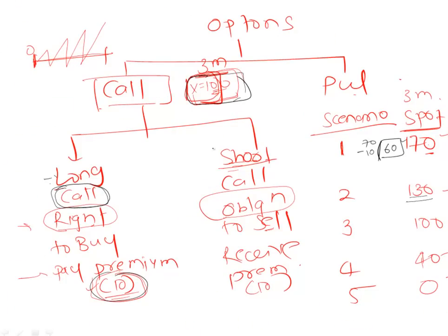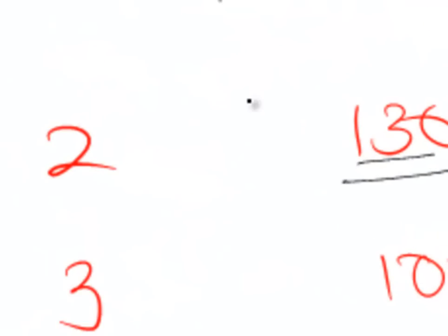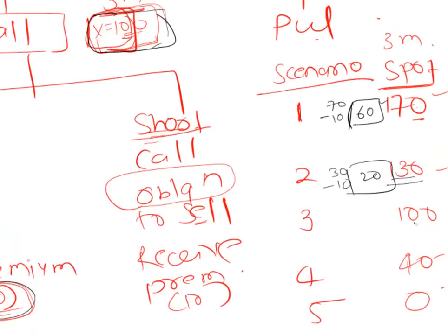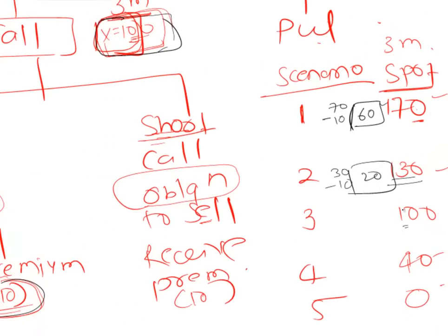In scenario 2, when the market price is 130 and you have a right to buy at 100, you will exercise. Your benefit is 30, but you paid premium of 10, so net benefit is 20. In scenario 3, when the price is 100 and you have a right to buy at 100, this right is valueless — you could have bought at 100 anyway. The 10 rupees paid to acquire this right is wasted, so you are making a loss of 10 rupees.